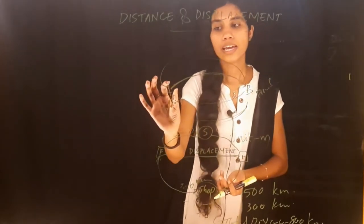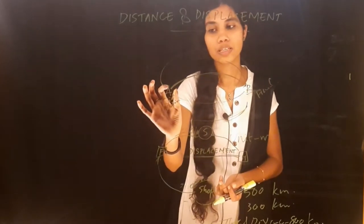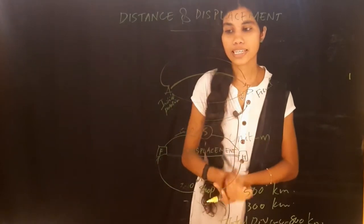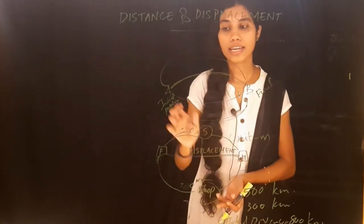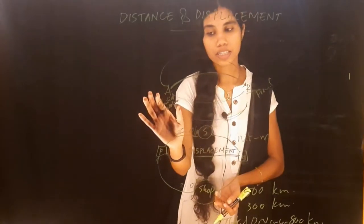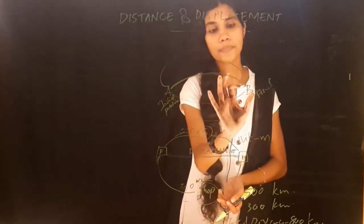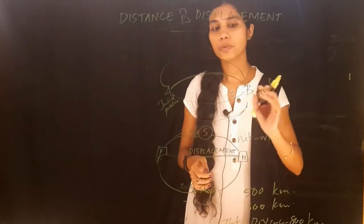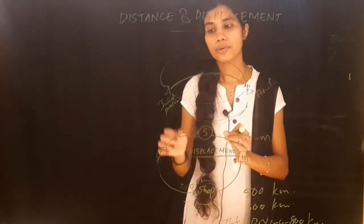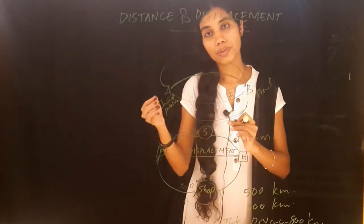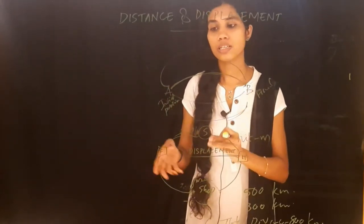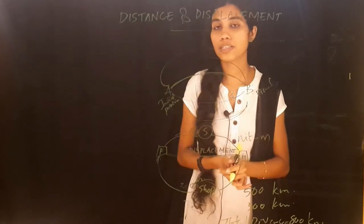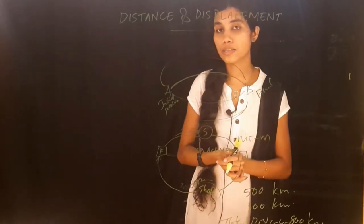A is the initial position of the body and B is the final position of the body.